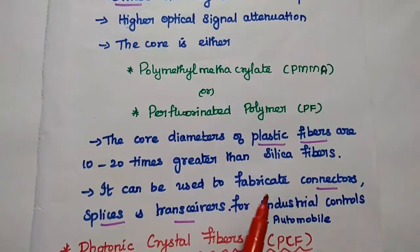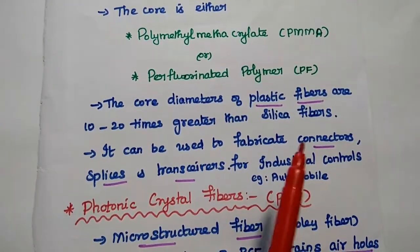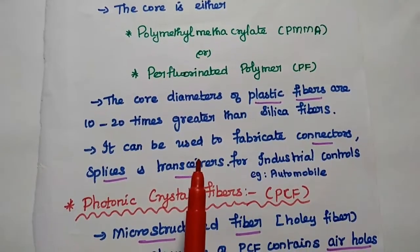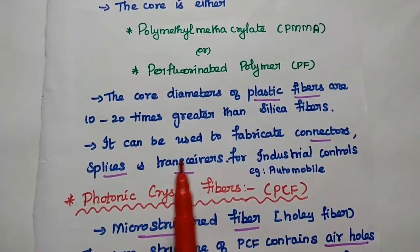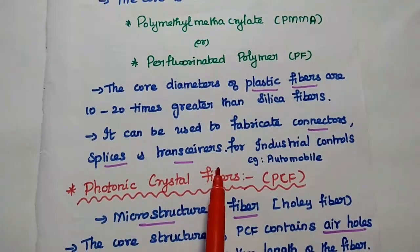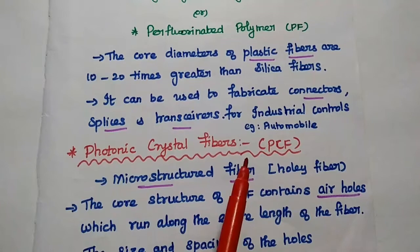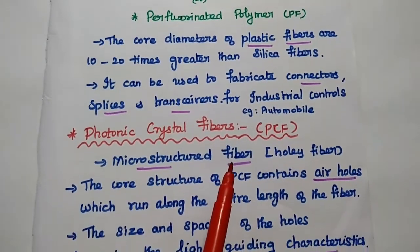Here the core diameters of plastic fibers are 10 to 20 times greater than silica fibers. The thickness is greater here. It can be used to fabricate connectors, splices and transceivers for industrial controls. For example, automobile industries, we can use these plastic fibers.